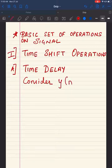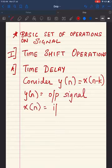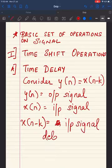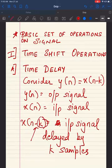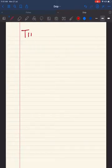Consider y[n] = x[n - k], where y[n] is called the output signal, x[n] is the input signal, and x[n - k] is the input signal delayed by k samples. When you see a minus sign, that means you have delayed the signal by k samples. k could be 1, 2, 3, or any value. Let's see an example to understand the property of time delay properly.